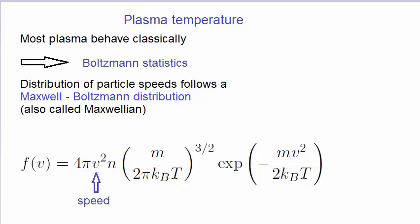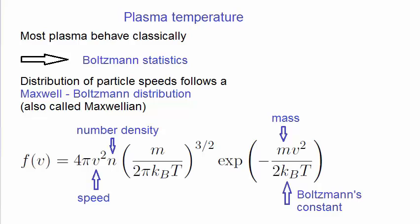Most of the variables there follow standard notation, but here are some definitions. Phi is the speed of the particles. N is the number density, that is, the number of particles per unit volume. This is another main parameter in plasmas. M is the mass of the particles. K subscript b is the Boltzmann's constant. But the important parameter in this equation is T, the temperature.